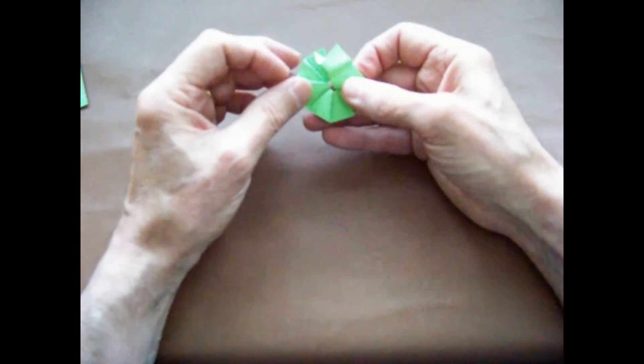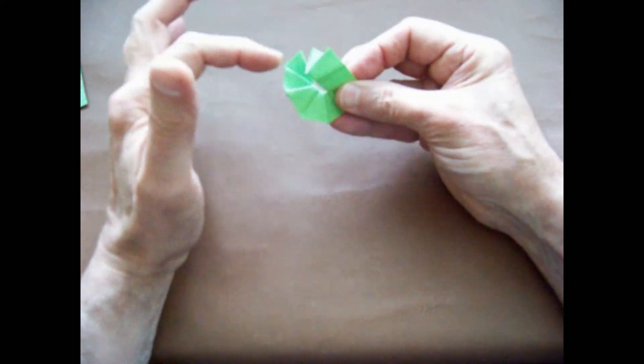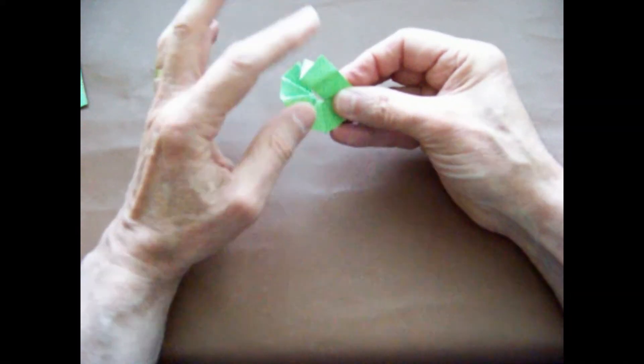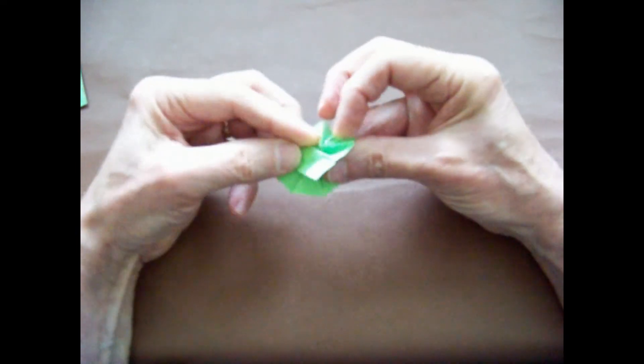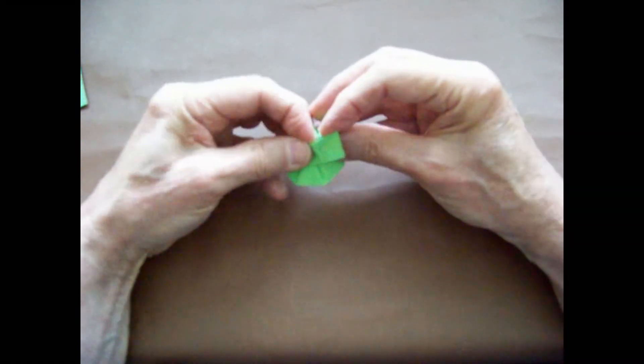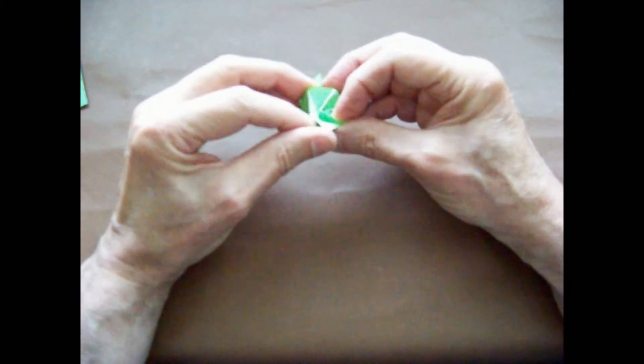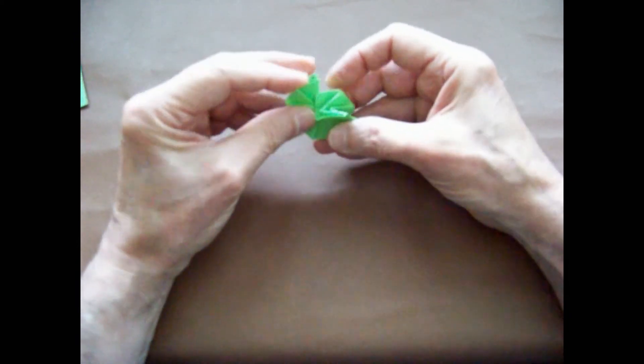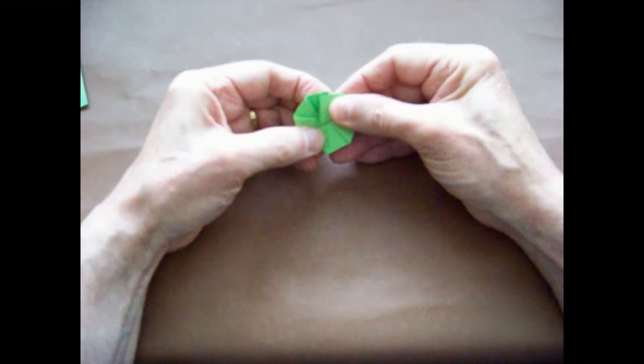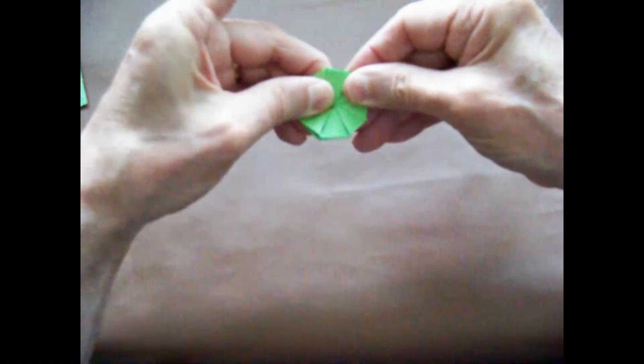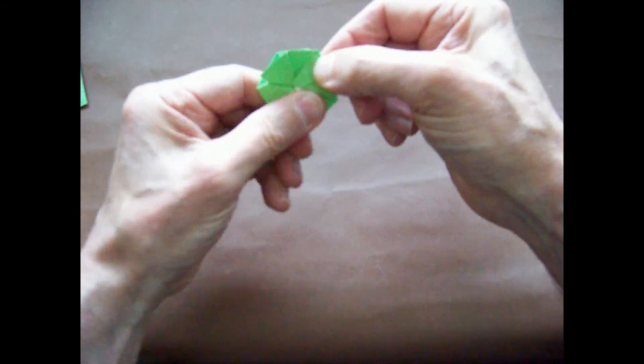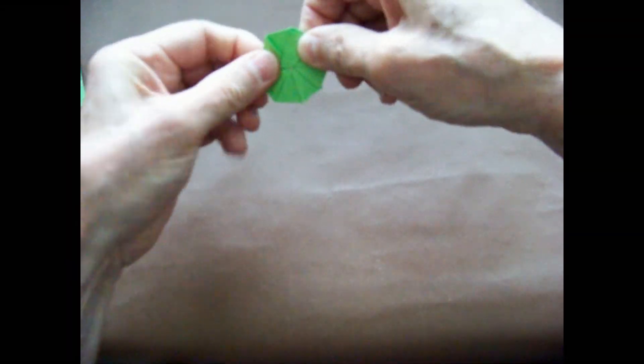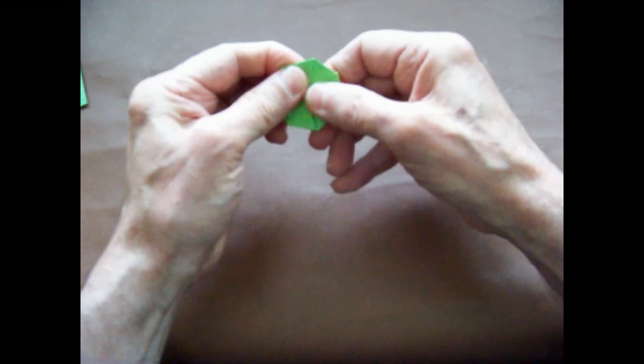The last couple folds will be made above the folds you've made previously. As best you can, you want to line up the last two edges. The hole in the center will be quite small. Fold all your edges over as tightly as you can.